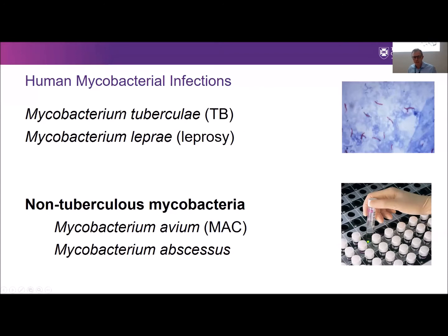When we think about human mycobacterial infections, TB is a standout one. Now that HIV is under better control, it kills more people than any other single pathogen. Leprosy is still an issue in some parts of the world, and many drugs we use in non-tuberculous mycobacteria have their origins in leprosy treatment. In Australia and many higher-income countries, non-tuberculous mycobacteria accounts for most mycobacterial disease, divided into slow growers such as Mycobacterium avium intracellulare (MAC) and Mycobacterium abscessus, increasingly identified in low-income countries as well.